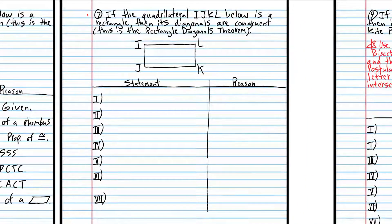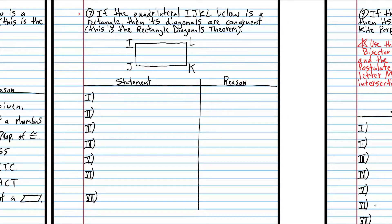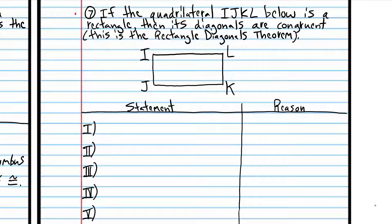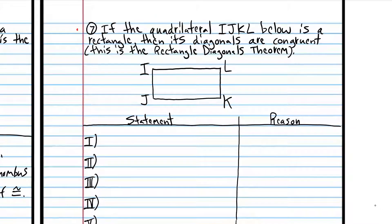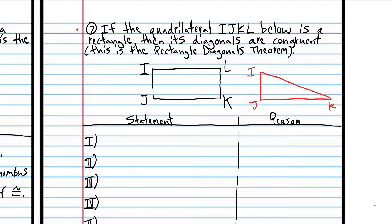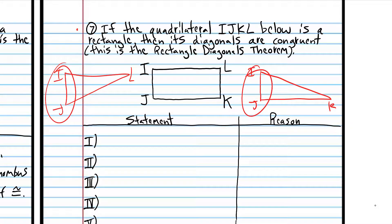If the quadrilateral IJKL below is a rectangle, then its diagonals are congruent. So if we know this is a rectangle, the diagonals are going to be the same length — we have to prove that. The way we're going to prove this is to consider this triangle and this triangle, prove those two triangles are congruent, and then corresponding parts will be congruent. This is triangle IJK and this other triangle is IJL. Notice IJ is common to both — we're doing that on purpose.